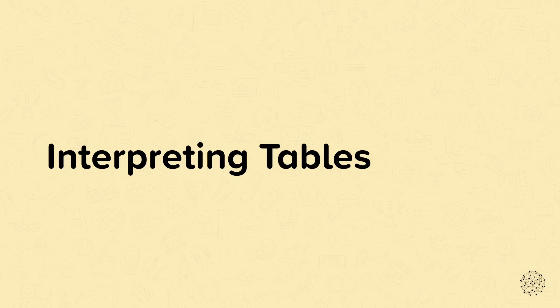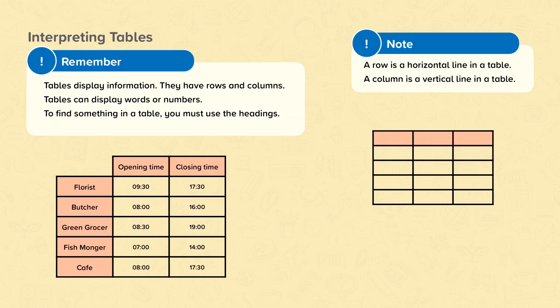Interpreting tables. Tables are a way of displaying information. They are often easier to read than lists. A table has rows — these are the horizontal lines. And a table has columns — these are the vertical lines.